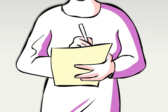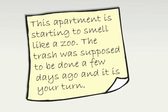If she is angry and wants her roommate to be aware of her anger, then this is how she might think through writing the note. Well, I really want her to know this place stinks, so I'll say that it smells like a zoo. She's late taking it out, so I'll be sure to point that out by saying that it was supposed to be done a few days ago. I also want her to know it's not my job, so I'll use the words 'your turn.'